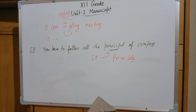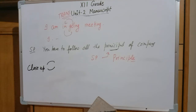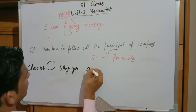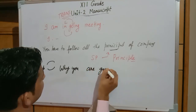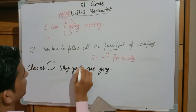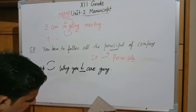The next sign is Close Up. This is used when you need to bring letters or words nearby by removing extra space. For example, if I write 'why you are going' but there is more space in a particular part of the statement, we use the Close Up sign to reduce that space.